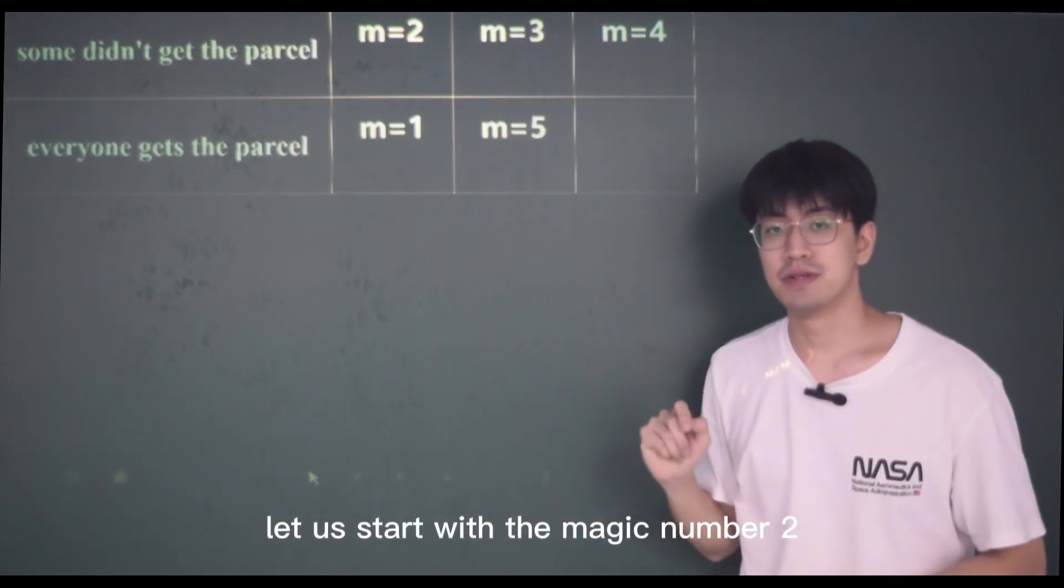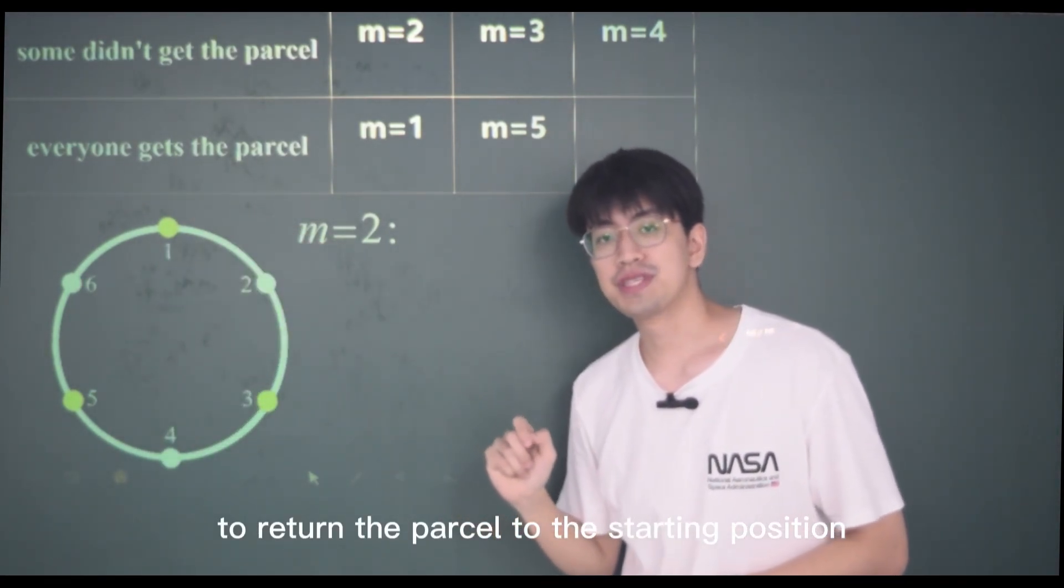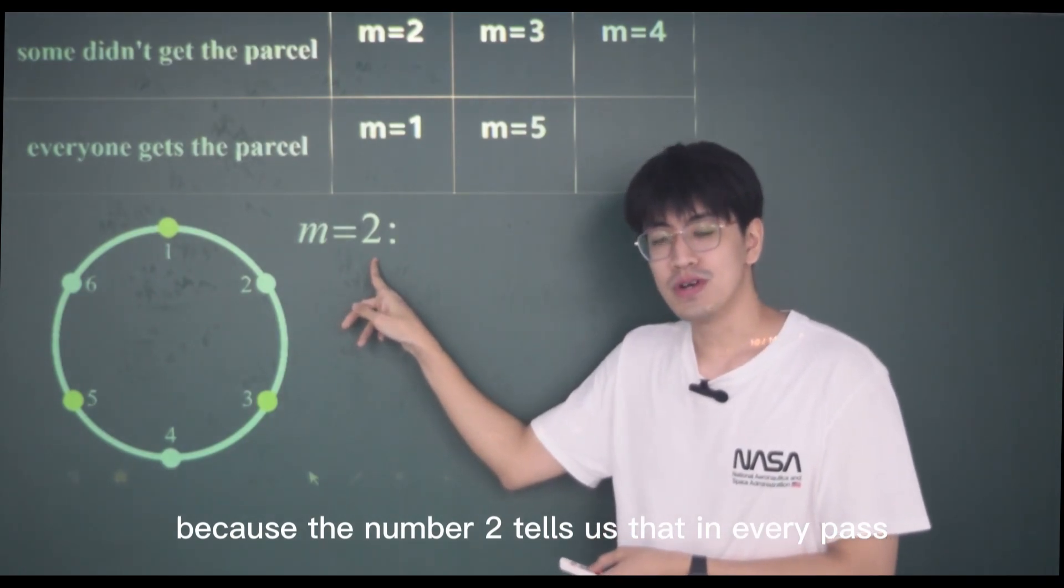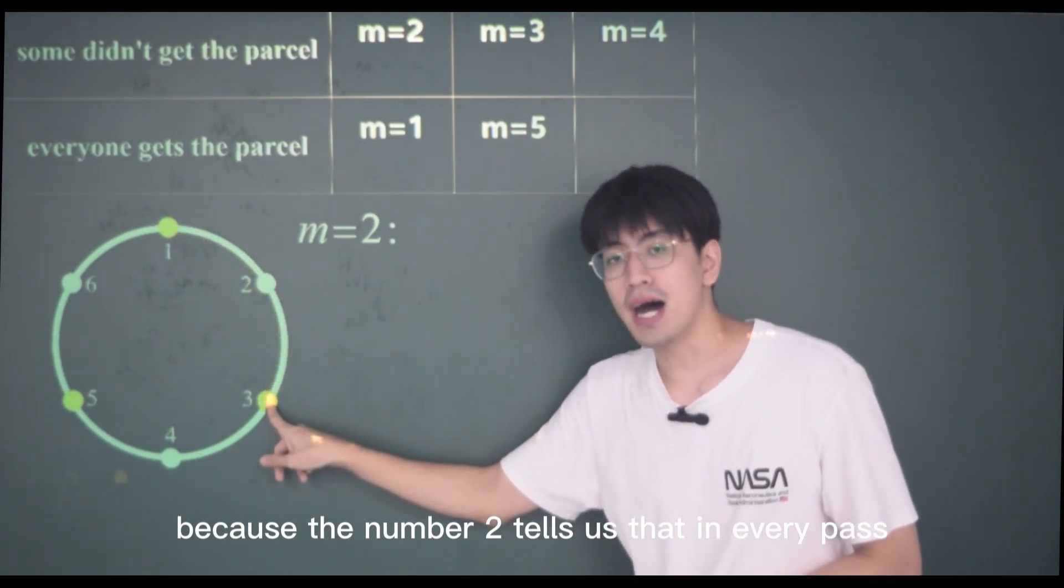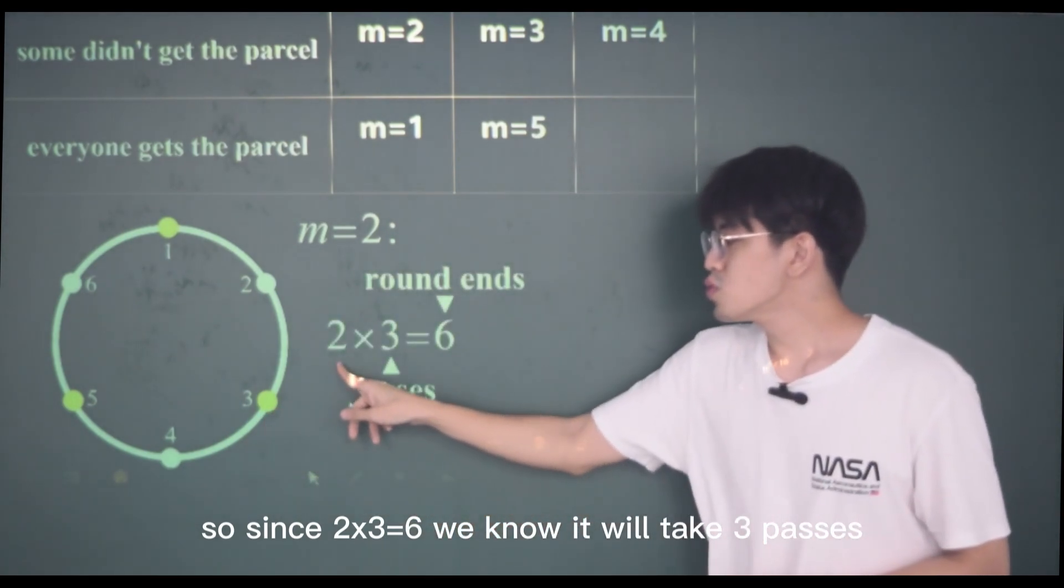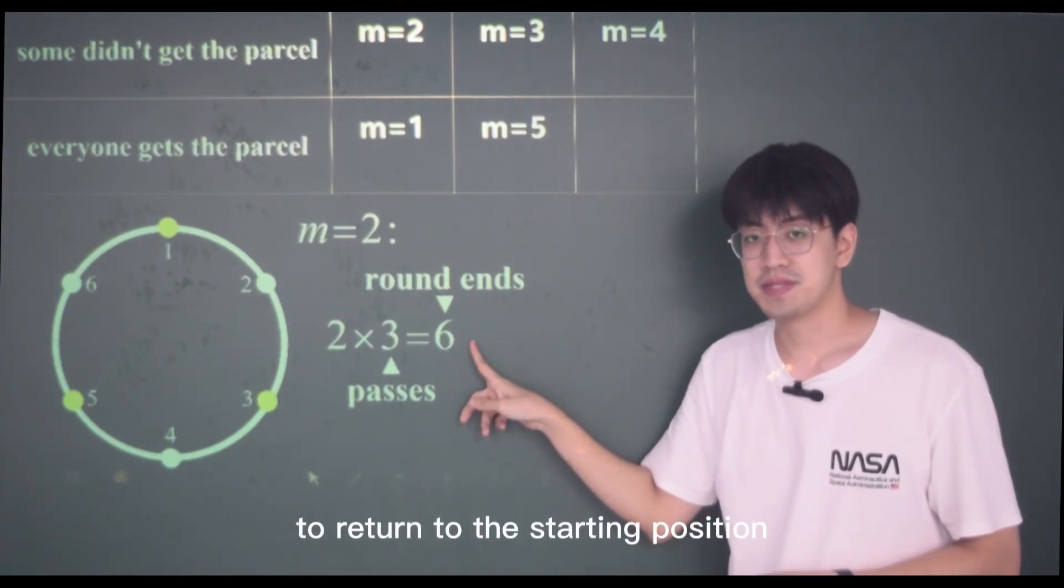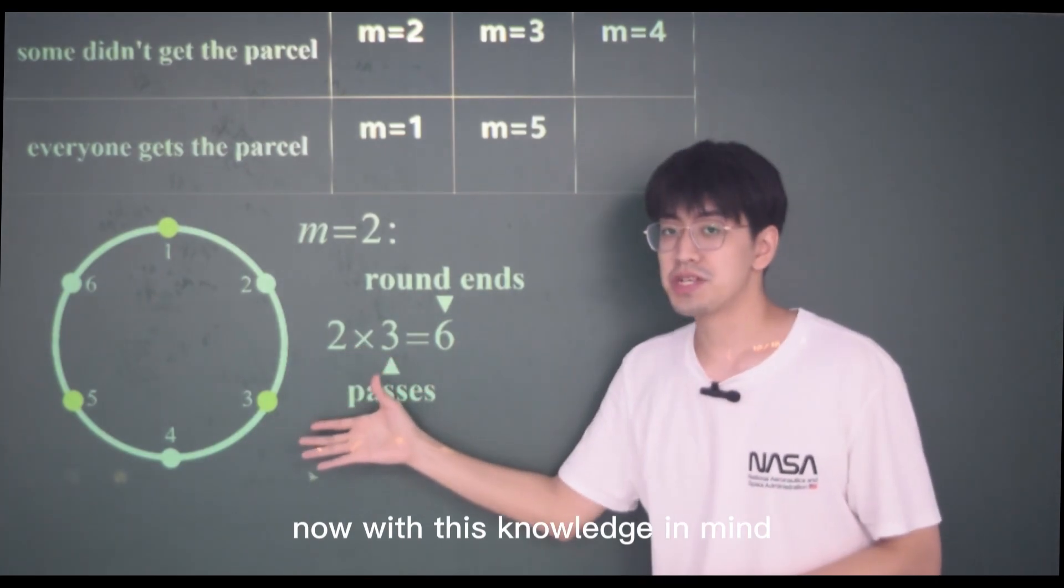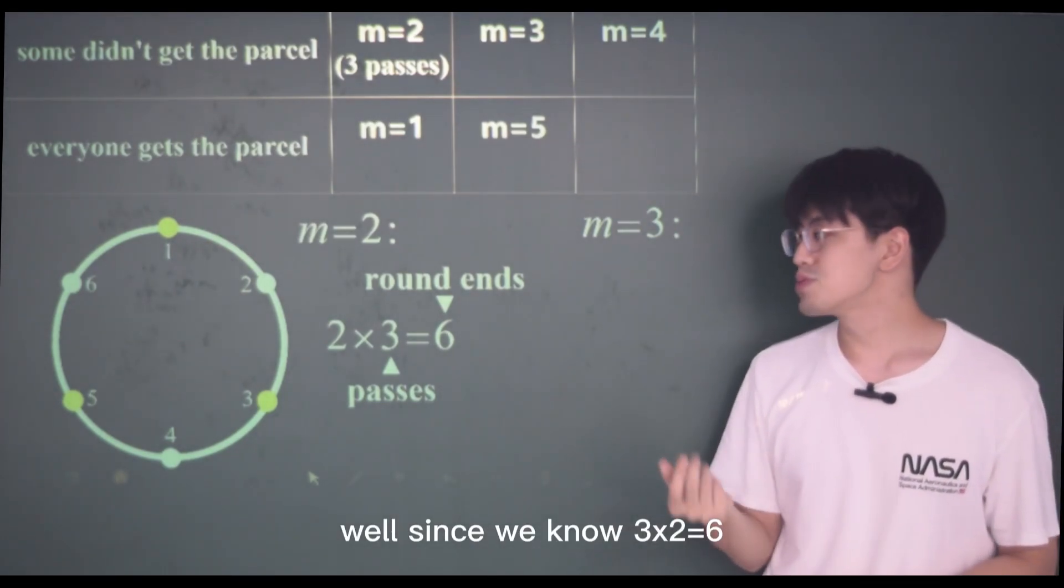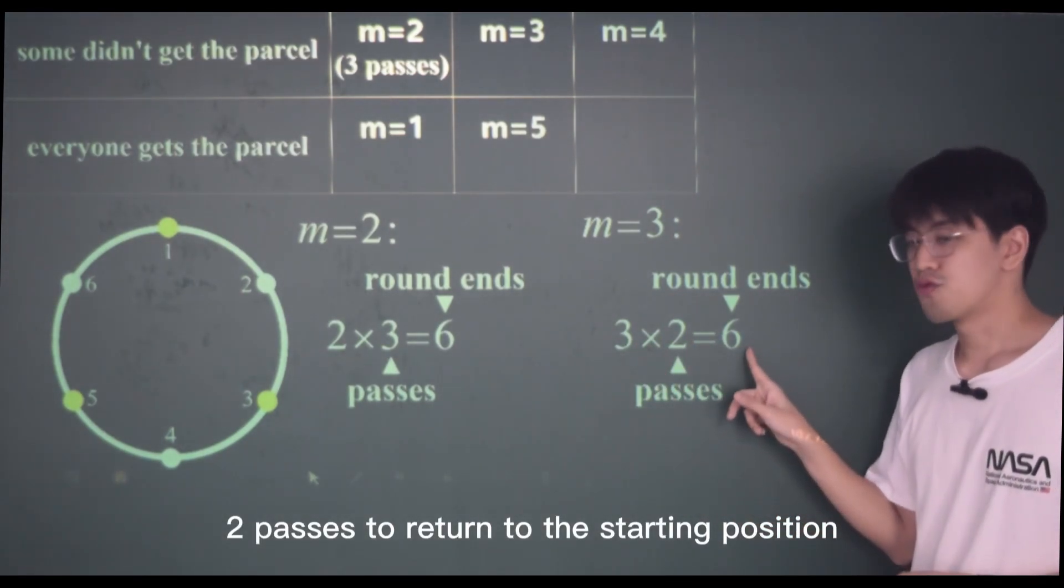Let us start with the magic number two. We see that with the magic number two, we need three passes to return the parcel to the starting position. Why is that? Because the number two tells us that in every pass, we travel two steps along this circle. So, since two times three equals six, we know it will take three passes to return to the starting position. Now, with this knowledge in mind, can you figure out how many passes it would take for the magic number three? Since we know three times two equals six, it will have taken two passes to return to the starting position.